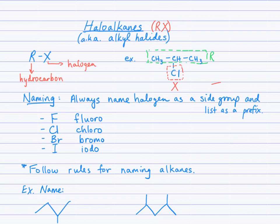So for example, we have CH3CHCH3. You'll notice the middle carbon has a chlorine attached to it. So what I've outlined in green is the R, the hydrocarbon component, and the X is the halogen.